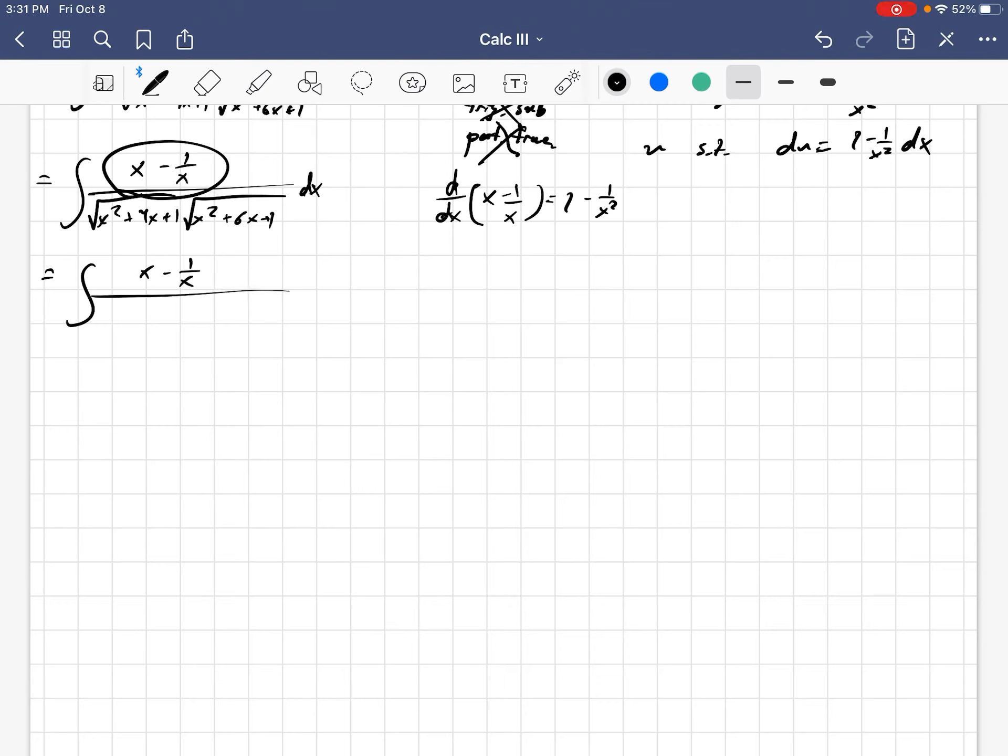We have x minus 1 over x times, and then I'm going to pull out a factor of x in each of those, which becomes square root x on the outside, but I have two square root x's, so that becomes an x. Square root x plus 1 over x plus 4, square root x plus 1 over x plus 6 dx. And then I'm going to divide by that factor of x on the bottom again and get 1 minus 1 over x squared times square root x plus 1 over x plus 4 and then x plus 1 over x plus 6. And look at that. I have an x plus 1 over x and an x plus 1 over x.